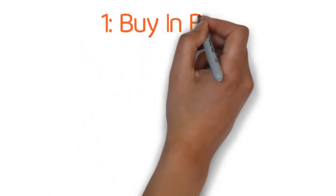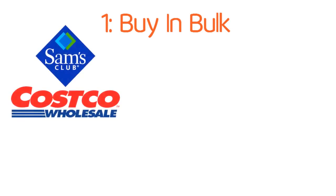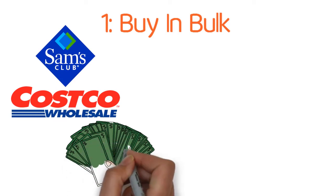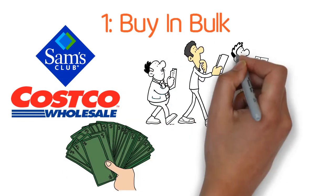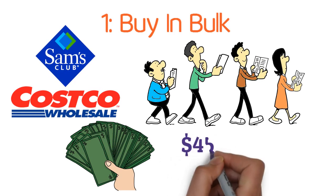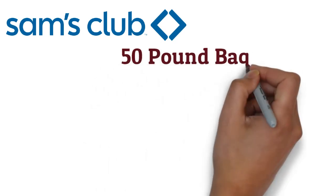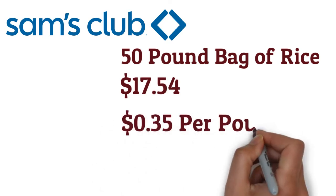Tip number one, buy in bulk. Try to get a membership at Costco or Sam's Club. You might be surprised on how much money you can save when you buy in bulk. Let me just walk you through a pretend scenario. Let's say you become a member of Sam's Club for $45 a year. At Sam's Club, they have a 50-pound bag of rice that costs $17.54. So that comes out to $0.35 per pound of rice.